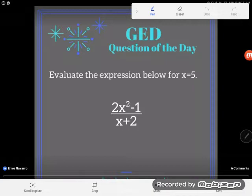But I just want to assure you that this is actually not even really an algebra problem. It's more of an arithmetic problem in disguise. Let's take a look at what I mean here. It says evaluate the expression below for x equals 5, and then I have this rather disgusting looking expression here: 2x² - 1 all over x + 2.